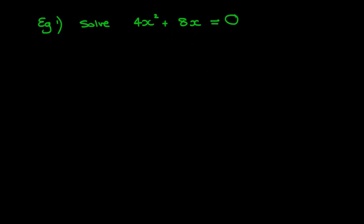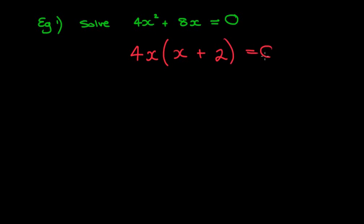Previously we've been able to factorise expressions, and when solving quadratic equations it's all about factorising first, just like with normal expressions. What goes into 4x squared and 8x? The common factor is 4x. So we get 4x times x plus 2, which equals 0.